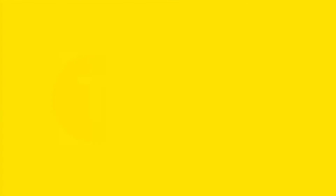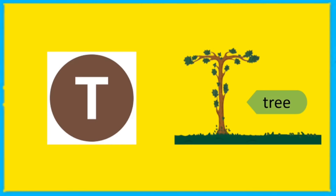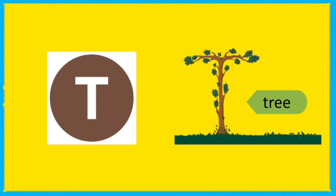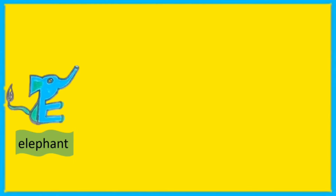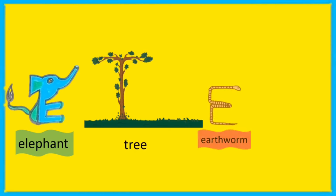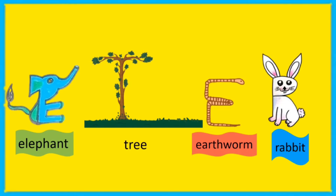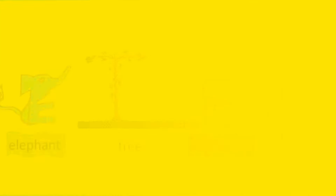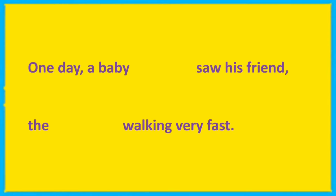Then let's go for the letter T, because we are going to get a tree from T. So we have four pictures with us: elephant, tree, earthworm, and rabbit. What are we going to do with that?